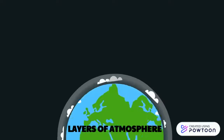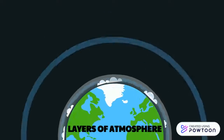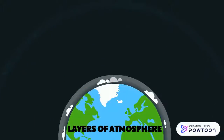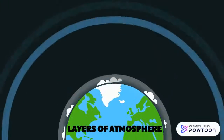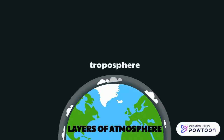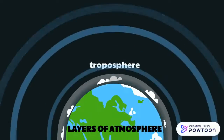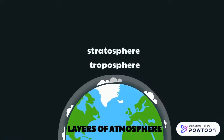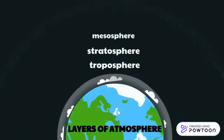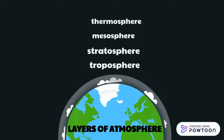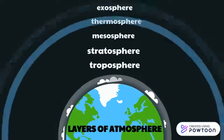The thick gaseous cover of air surrounding the earth is called atmosphere. The five main layers are troposphere, stratosphere, mesosphere, thermosphere, and exosphere.